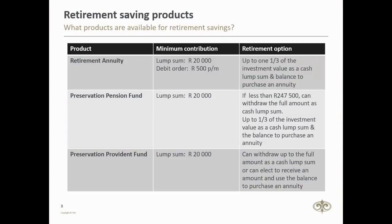What products does today's topic apply to? The first one is a retirement annuity. If you're contributing a lump sum to start off on our platform, our minimum investment is 20,000 Rand. Once you've met this requirement, you can add any amount at any time and even set up a debit order at a later stage. We also have the debit order option, where the minimum contribution amount is 500 Rand per month, and once you've met the minimum requirement, you can make add-up contributions of any amount at any time and also amend your debit order details at any time.